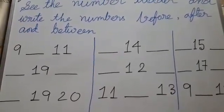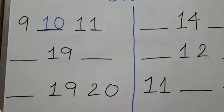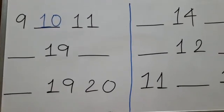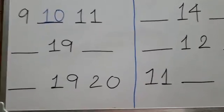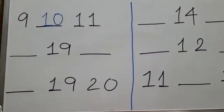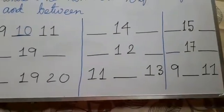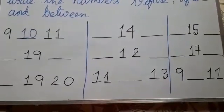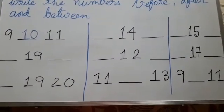What is the before number of 19 and after number of 19? Now the before number of 19 is 18 and the after number of 19 is 20. Now you have to do it whole. The whole page you have to finish. After that I will give the answers and you will match it.